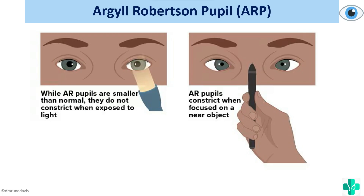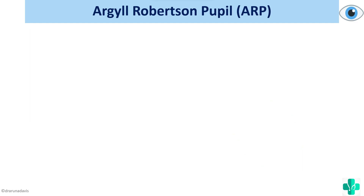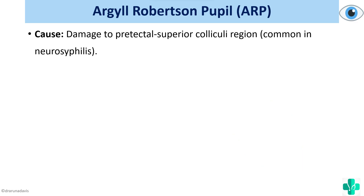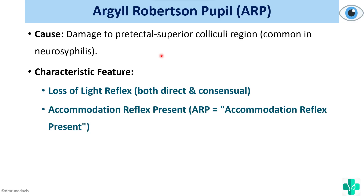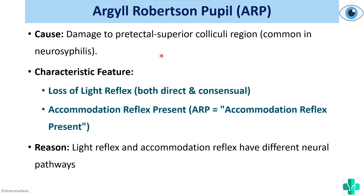You can remember this by the mnemonic ARP — Accommodation Reflex Present. Why does this happen? The Argyll Robertson pupil is produced by damage to the pre-tectal region, which is common in neurosyphilis. Since the pre-tectal nucleus is only involved in the light reflex, damage there abolishes the light reflex but leaves the accommodation reflex intact, because the pre-tectal nucleus is not involved in the accommodation reflex. The characteristics are: loss of both direct and consensual light reflex, with accommodation reflex preserved.